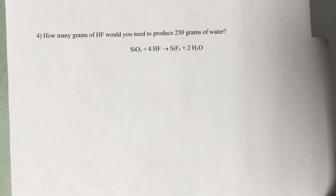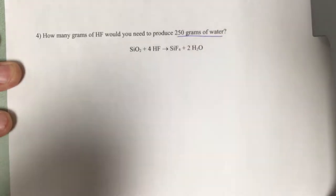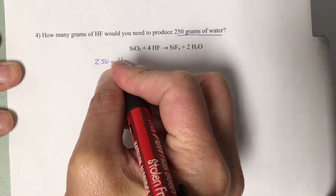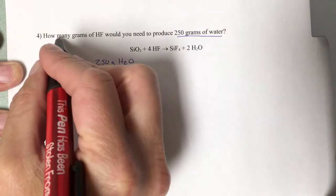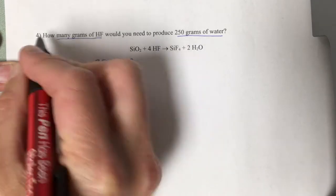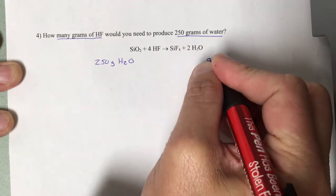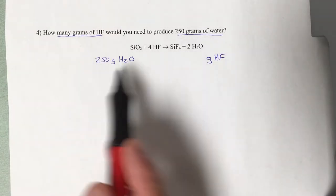Again, we're going to start just like we did the two-step problems by looking at what we're given: 250 grams of water, and what it is we're trying to find here: the number of grams of hydrogen fluoride.